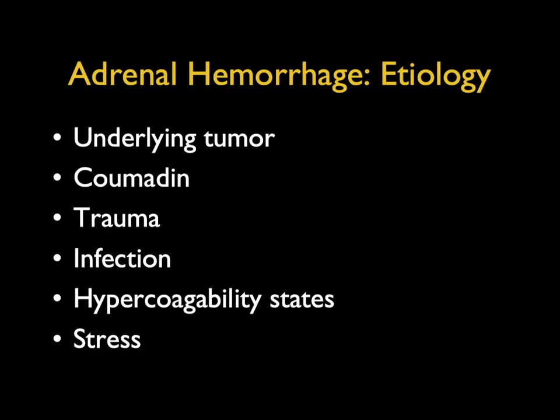Etiologies include underlying tumors — occasionally metastasis or primary tumors can bleed, though that's rare. Patients on anticoagulant therapy are another cause, though that's becoming less common as management improves. Trauma is common, particularly associated with liver or renal lacerations, and typically involves right-sided or right adrenal involvement. We also consider infection, hypercoagulability states, and stress.